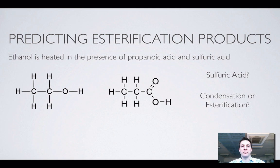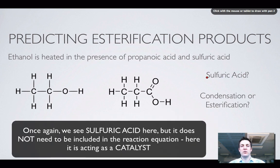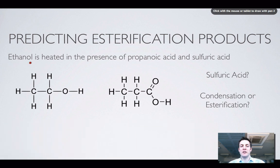Let's have a look at a particular alcohol and carboxylic acid we could mix to make an ester. We're told that ethanol is heated in the presence of propanoic acid and sulfuric acid. The sulfuric acid is a bit of a red herring — a little like in the redox side of things when we were oxidizing alcohols, we don't really need to worry about it too much.